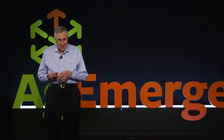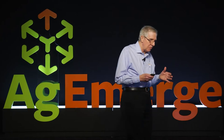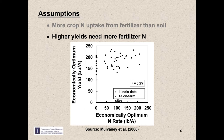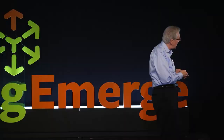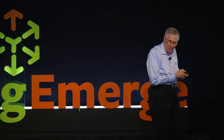The idea that the fertilizer is the main source of N leads us to a second key assumption, which says that higher yields need more fertilizer N. Do they? Let's take a look at it using on-farm response data coming from 47 studies in Illinois. In this figure, we're plotting economically optimum yield from those studies versus economically optimum N rate. If this assumption is correct, we'd expect to see a positive sloping trend line between the two parameters going up as we go to the right.